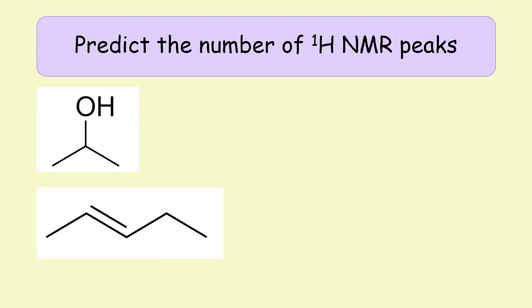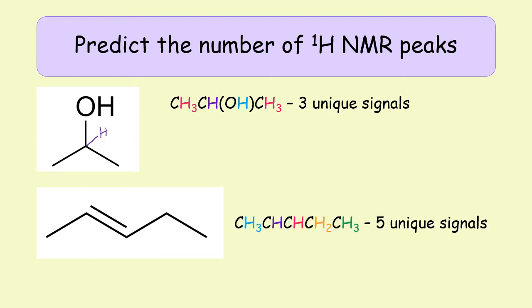Every proton environment gives a different signal, so how many environments does each molecule have? For the top skeletal formula example, on the left and right hand side we have CH3 groups — those are symmetrical so they give one signal. We'd have one signal for the OH, and one signal for the remaining hydrogen, giving three unique signals total. For the bottom molecule reading CH3-CH-CH-CH-CH2-CH3, that molecule has no symmetry, so we see a unique signal for each type — five different signals. Always watch for symmetry, as symmetry reduces the number of signals.